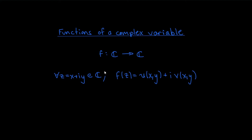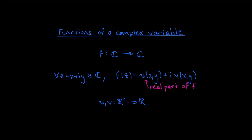When you have such a function, you can think about what it does to a complex number of the form z = x + iy. When you plug a complex number z of that form into f, you're going to get out something which has a real and an imaginary part, and those parts are going to be functions of the parameters x and y. If I call those real and imaginary parts u and v, then u and v are going to be functions from ℝ² to ℝ. I might also refer to u as the real part of f and v as the imaginary part of f.